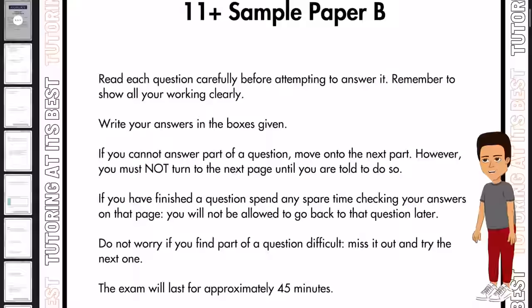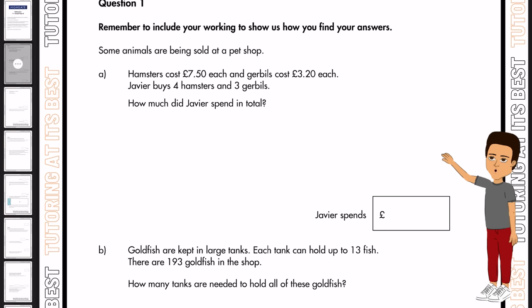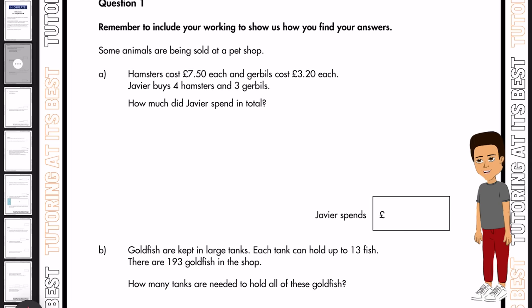Question number one. Some animals are being sold at a pet shop. Hamsters cost £7.50 each and gerbils cost £3.20 each. Javier buys four hamsters and three gerbils. So how much did Javier spend in total? First of all, we'll have £7.50 times that by four, which gives us £30. Then £3.20 times by three gives us £9.60. We'll then add that together and get £39.60.